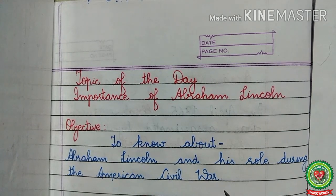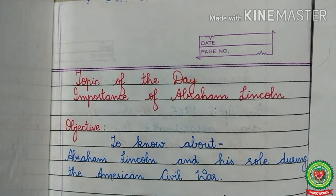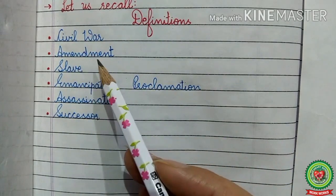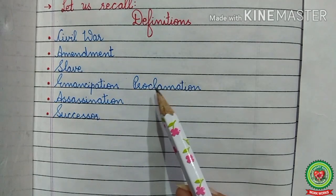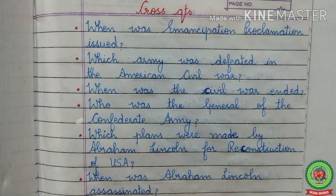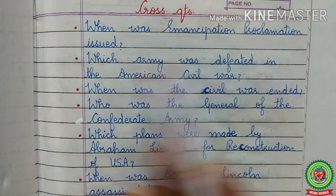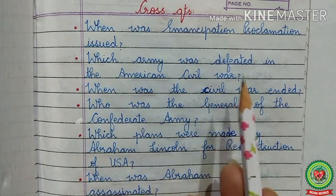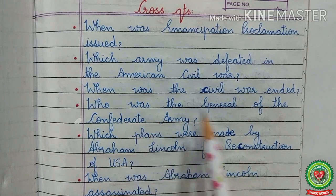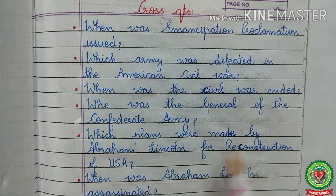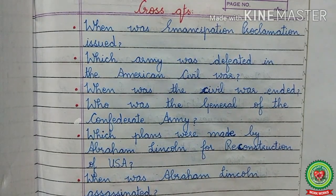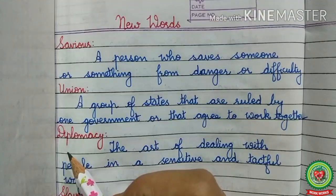Before discussing today's topic, let us recall the definitions and cross-question answers related to the previous topics. Definitions: civil war, amendment, slave, emancipation proclamation, assassination, and successor. Cross-questions: When was the Emancipation Proclamation issued? Which army was defeated in the American Civil War? When was the Civil War ended? Who was the general of the Confederate Army? Which plans were made by Abraham Lincoln for reconstruction of the USA, and when was Abraham Lincoln assassinated?